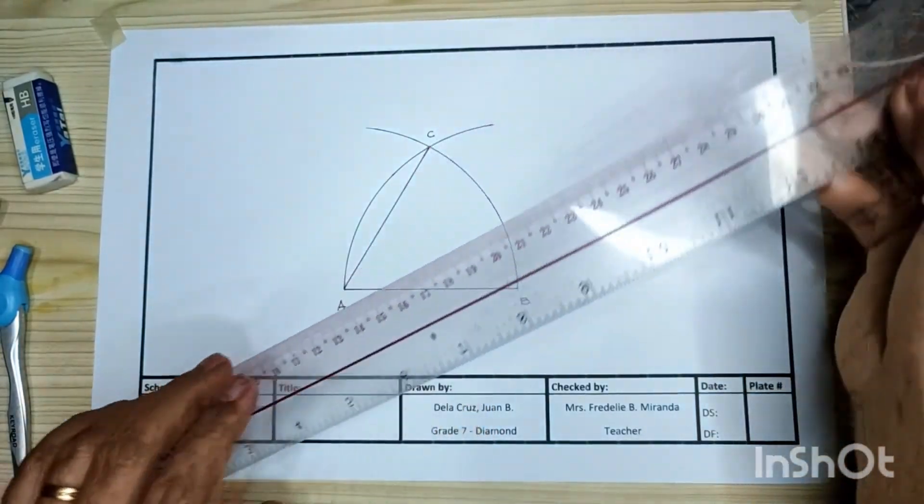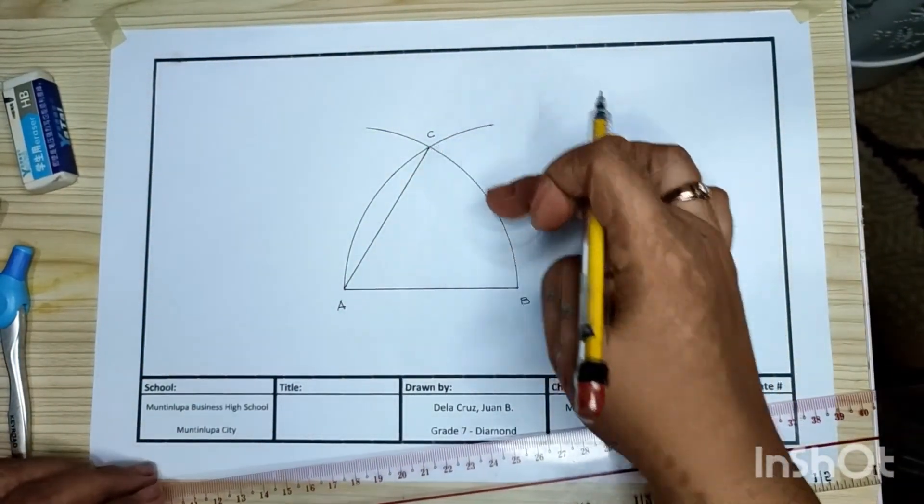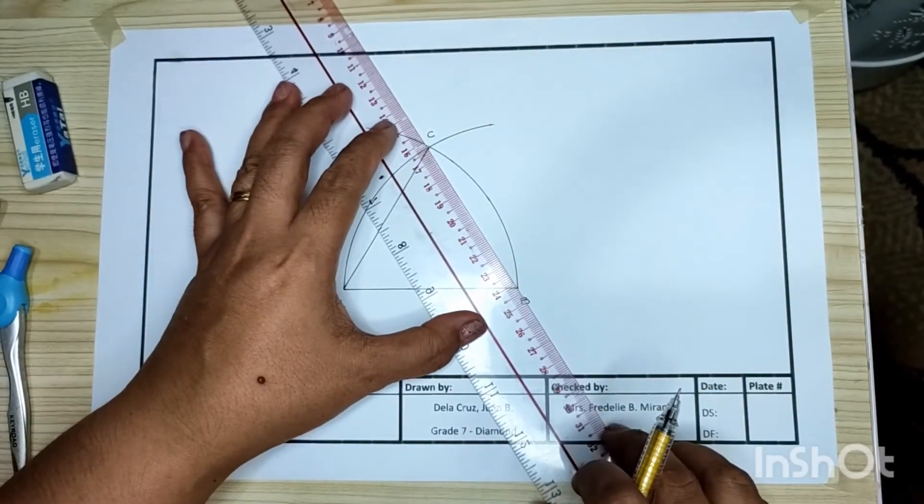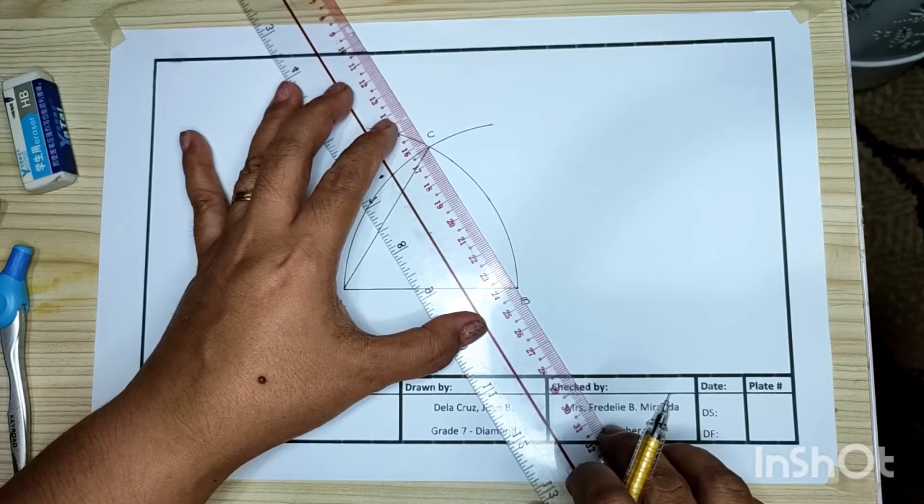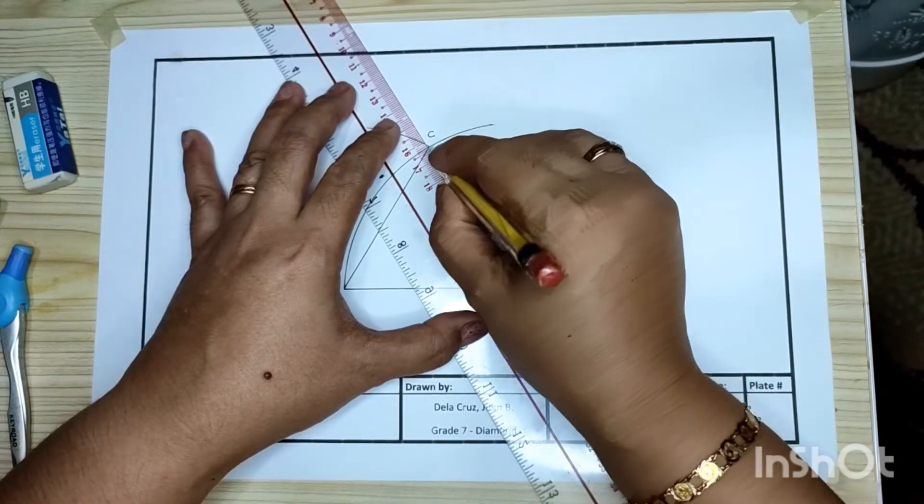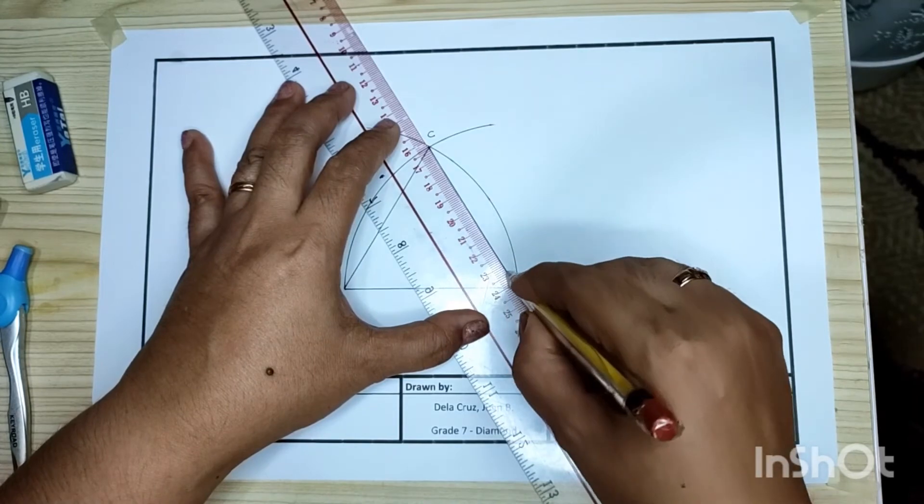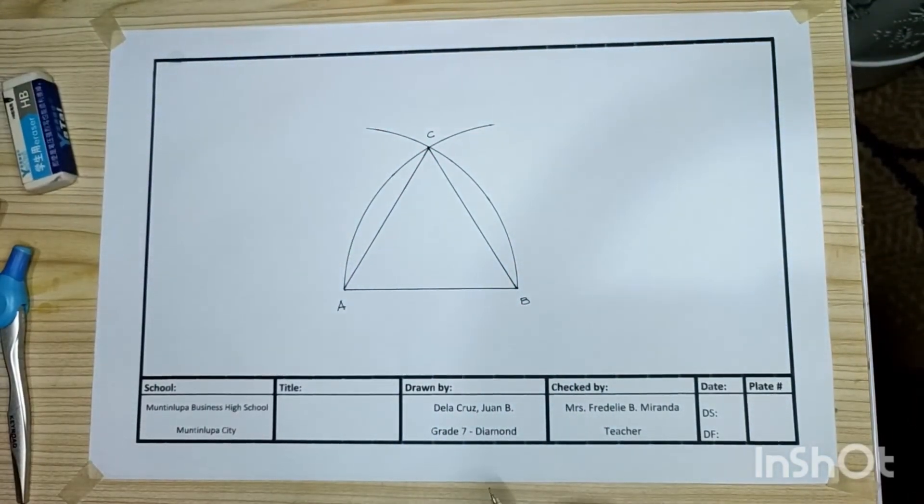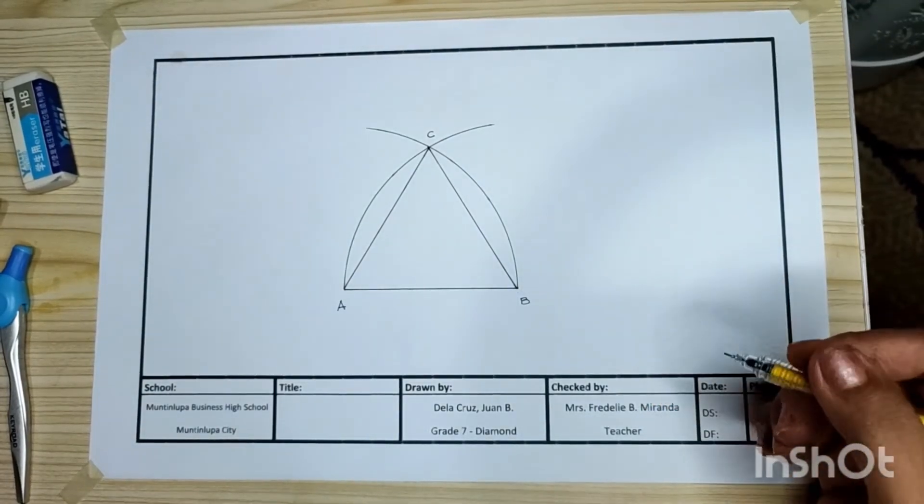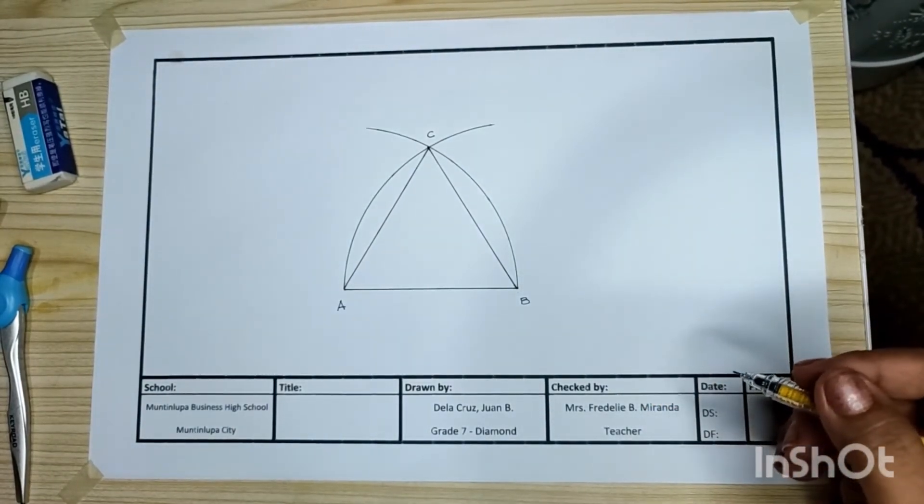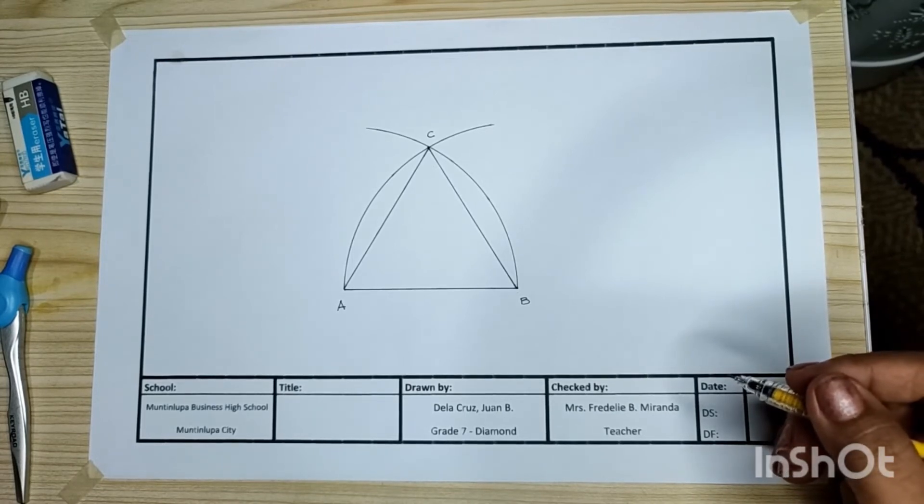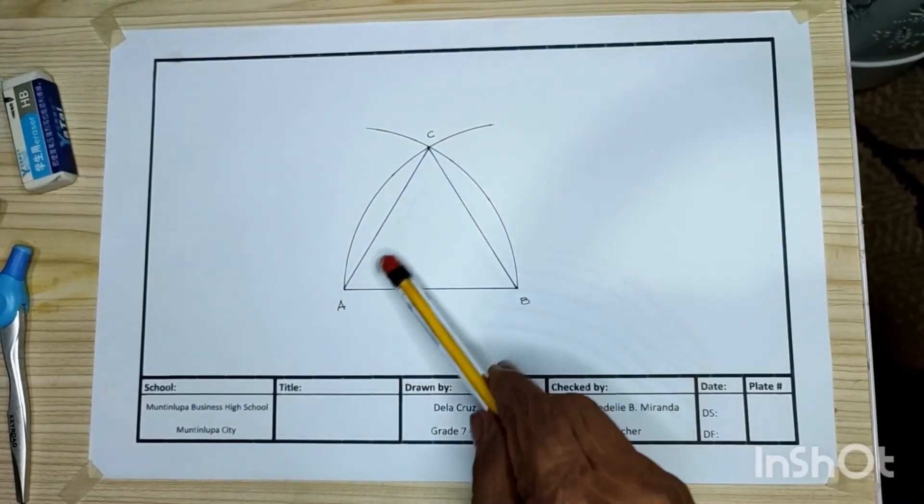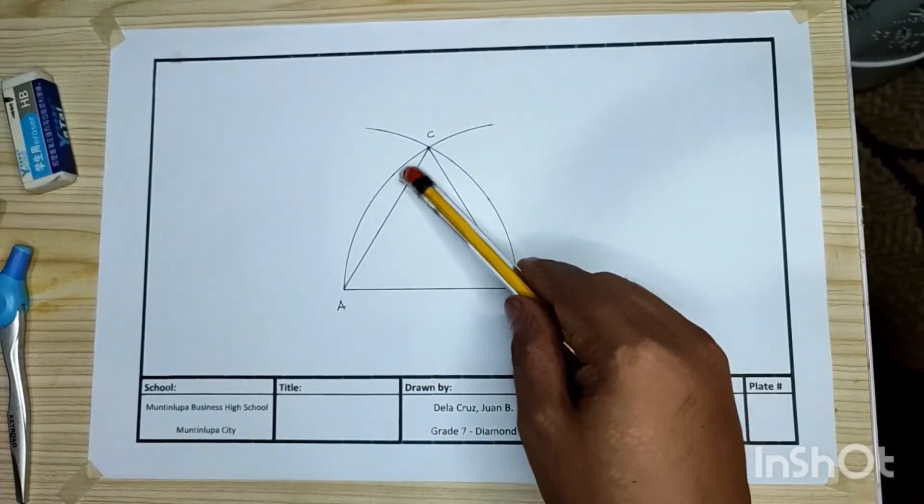Then connect point C to B. Point C to point B. We have already an equilateral triangle, or that is equiangular triangle. All sides and angles are equal.